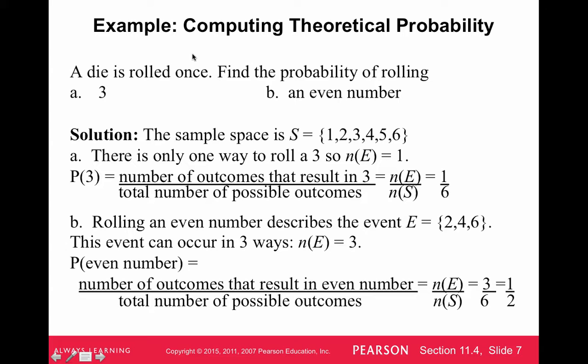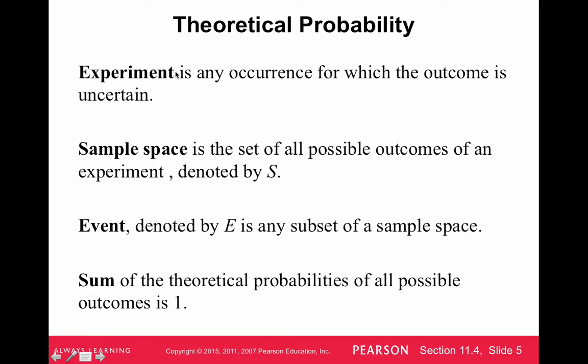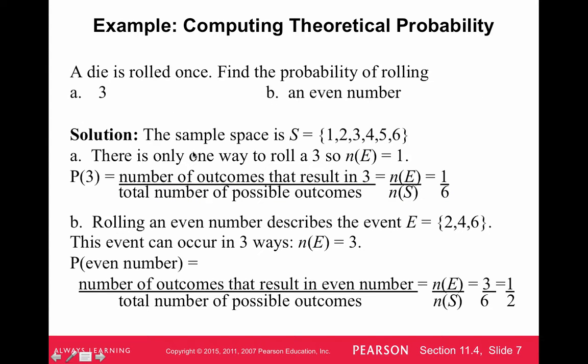A die is rolled once. Let's find the probability of A, rolling a 3, and B, rolling an even number. It helps to look at the sample space when we do this. We're talking about the experiment is rolling a die, and we're going to look at the sample space and figure out the probabilities of various events. The sample space when you roll a die is 1, 2, 3, 4, 5, 6. We're assuming we're rolling the cubic six-sided die. Those are the six outcomes, and they are all equally likely.